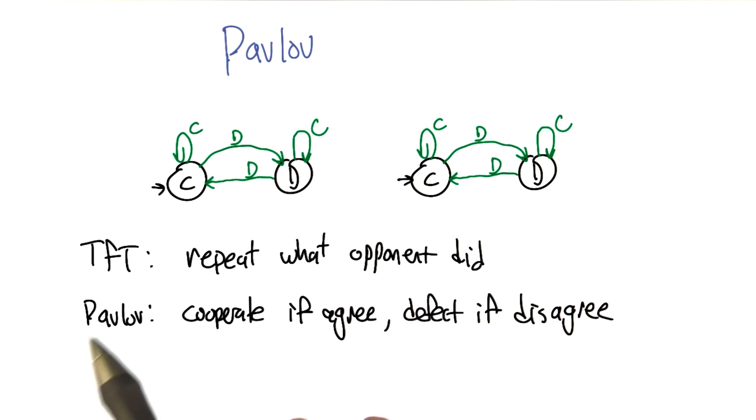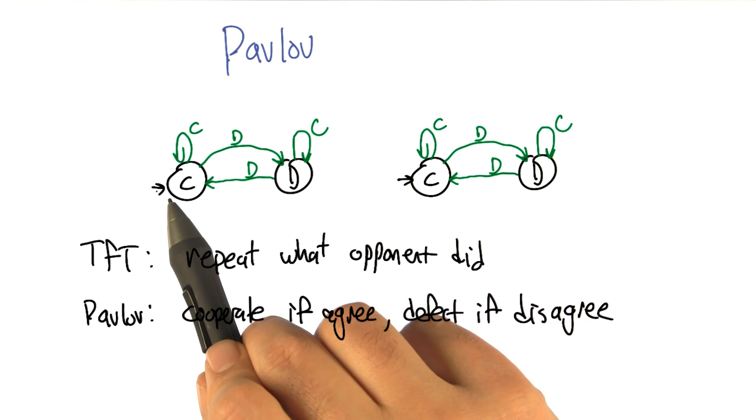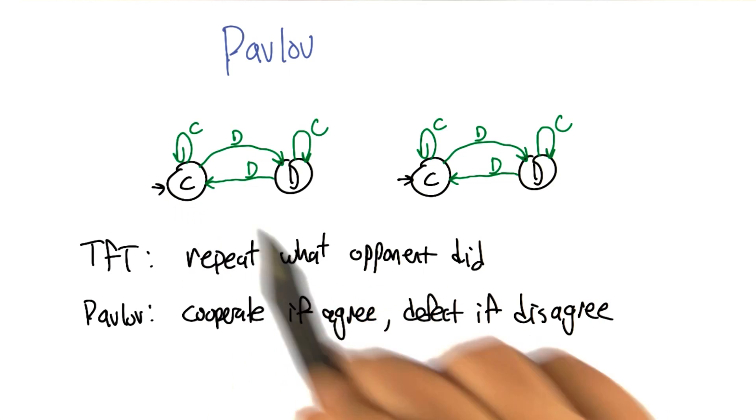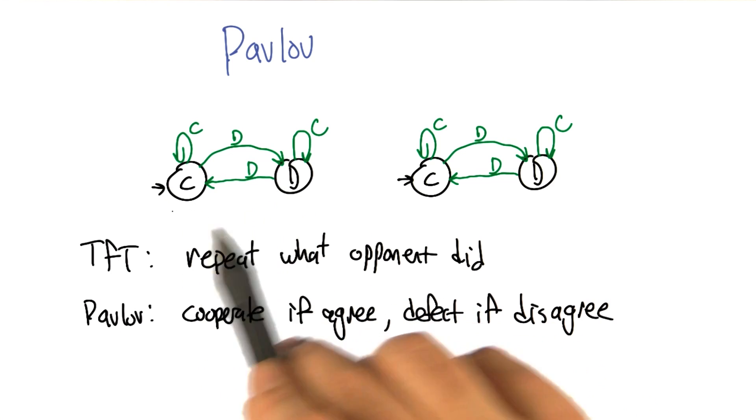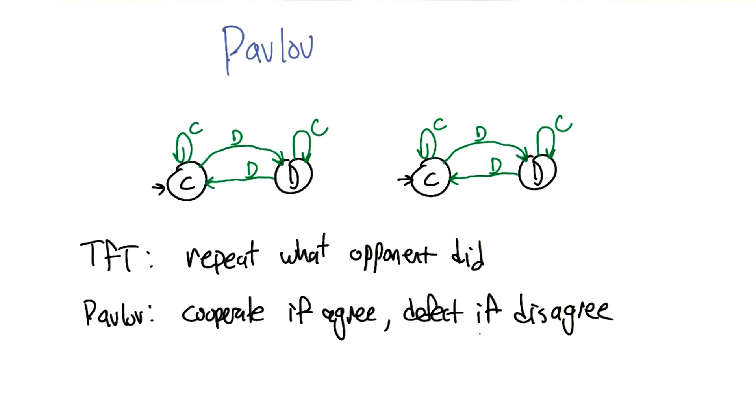Tit for tat is repeat what the opponent did. Pavlov is basically cooperate as long as we're agreeing - if we both defect, I'll cooperate; if we both cooperate, I'll cooperate. But if we disagree, then I will defect against you on the next round.